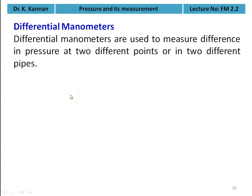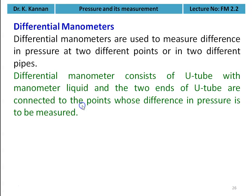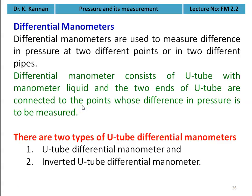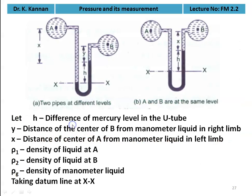The next topic is the differential manometer. Differential manometers are used to measure the difference in pressure at two different points or two different pipelines. A differential manometer consists of a U-tube with a manometric liquid, and the two ends of the U-tube are connected to the points whose pressure difference is to be measured. There are two types: the U-tube differential manometer and the inverted U-tube differential manometer.